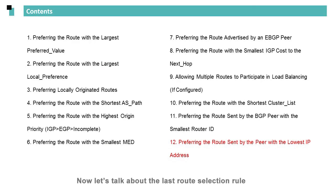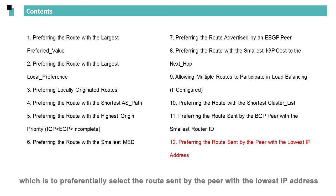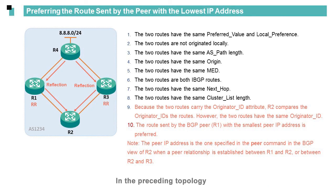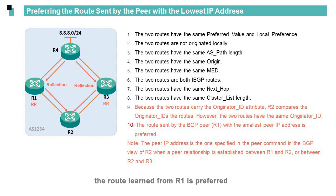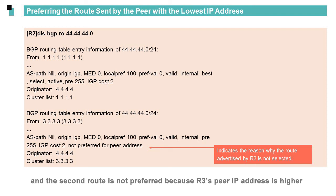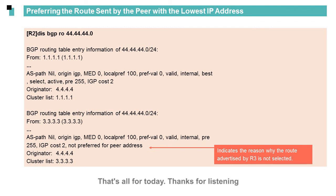Now, let's talk about the last route selection rule, which is to preferentially select the route sent by the peer with the lowest IP address. In most cases, the optimal route can be selected before this rule is applied. In the preceding topology, because the peer IP address of R1 is smaller than that of R3, the route learned from R1 is preferred. In the BGP routing table of R2, we can see two routes to 44.44.44.0/24. The first route is preferred, and the second route is not preferred because R3's peer IP address is higher. That's all for today. Thanks for listening.